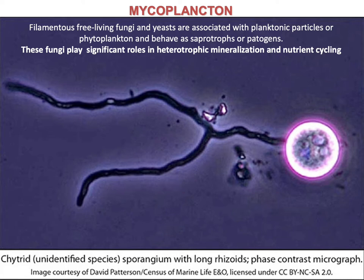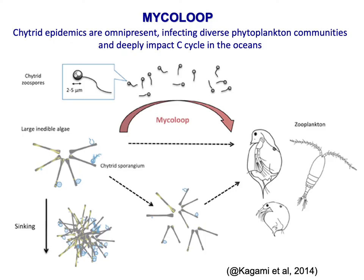These fungi play a significant role in heterotrophic mineralization and nutrient cycling. Most of the studies focus on chytrids, which often behave as very virulent parasites on planktonic algae. They have strong seasonality and impact on primary producer communities. Indeed, by means of the mycoplankton loop, parasitic chytrids can transfer material from large inedible phytoplankton to zooplankton, since fungal spores are excellent food for zooplankton.